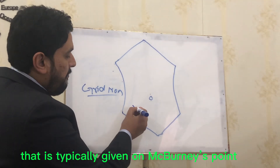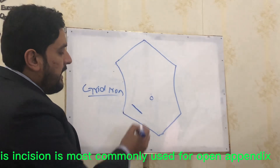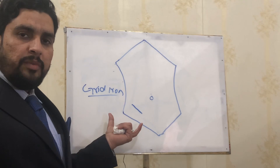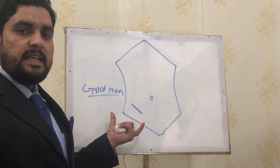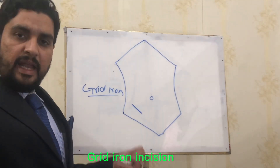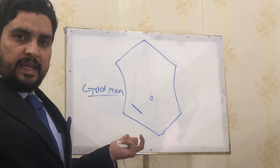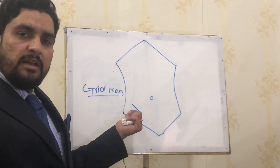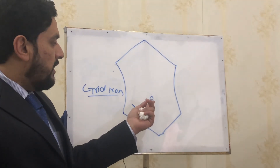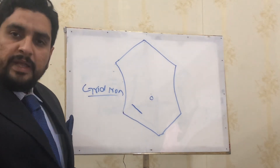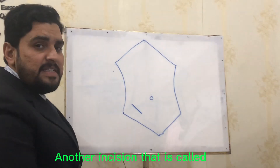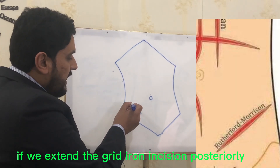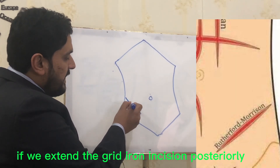The other incision we have is the gridiron incision, which is typically given on McBurney's point. This incision is most commonly used for open appendectomy in acute appendicitis. Where is McBurney's point? It is located at the junction of the lateral one-third and medial two-thirds of the line between the umbilicus and the anterior superior iliac spine.